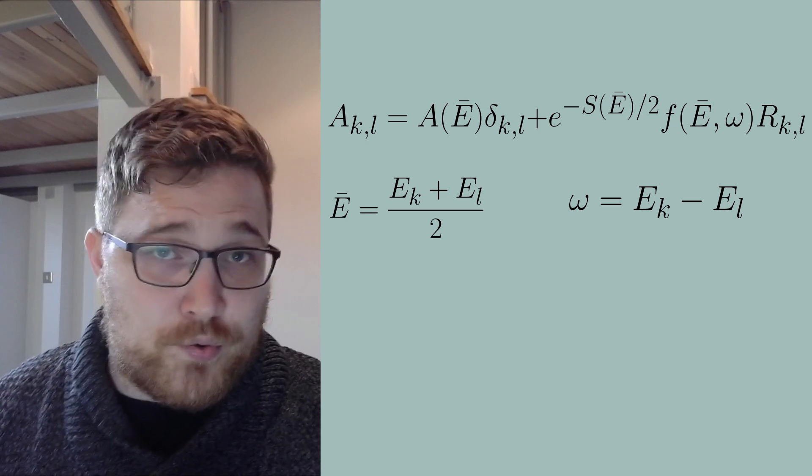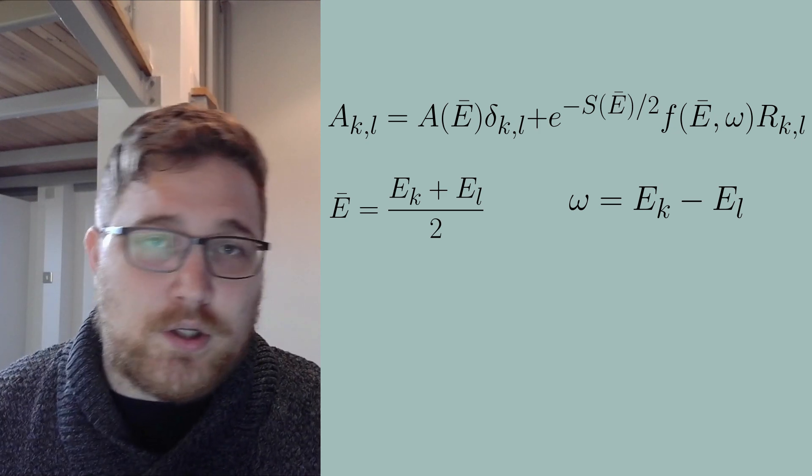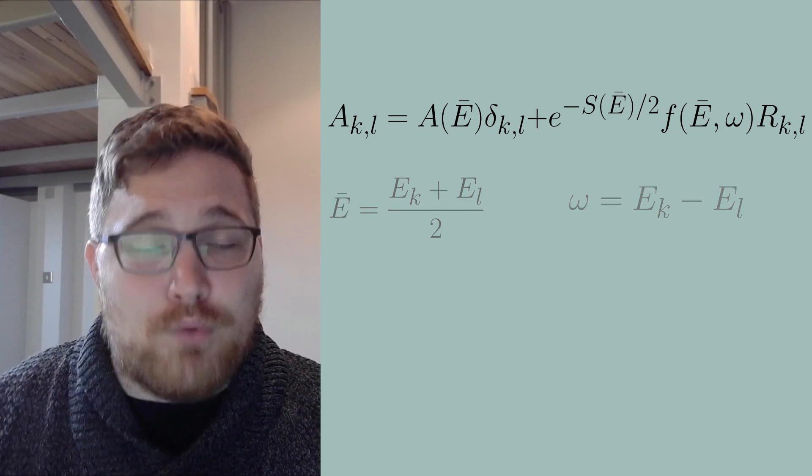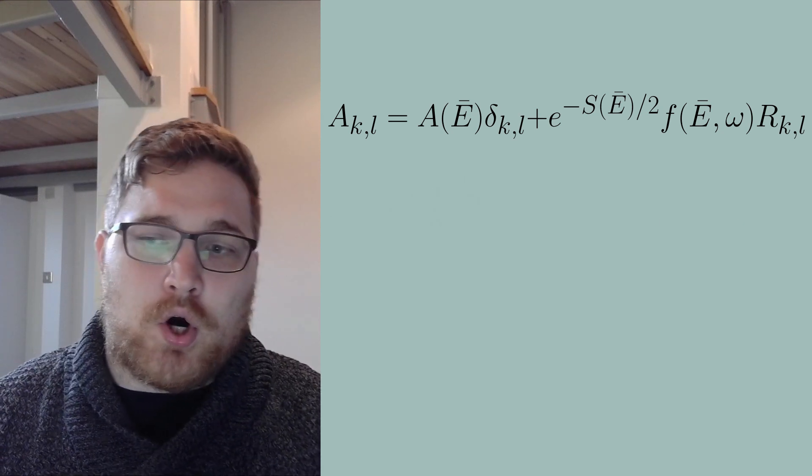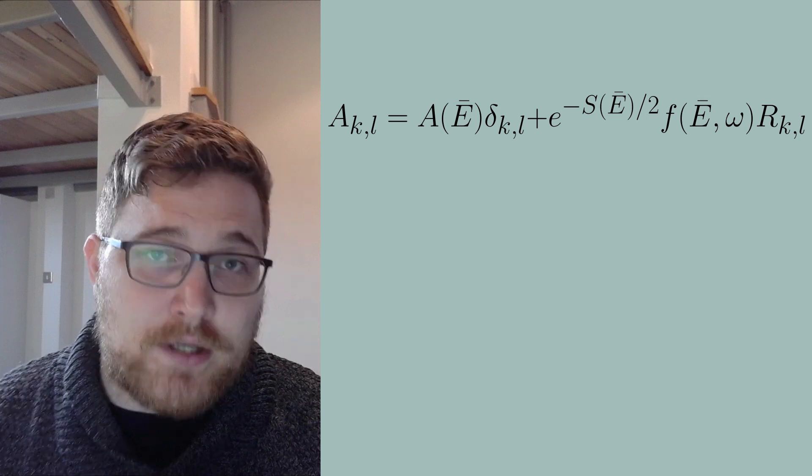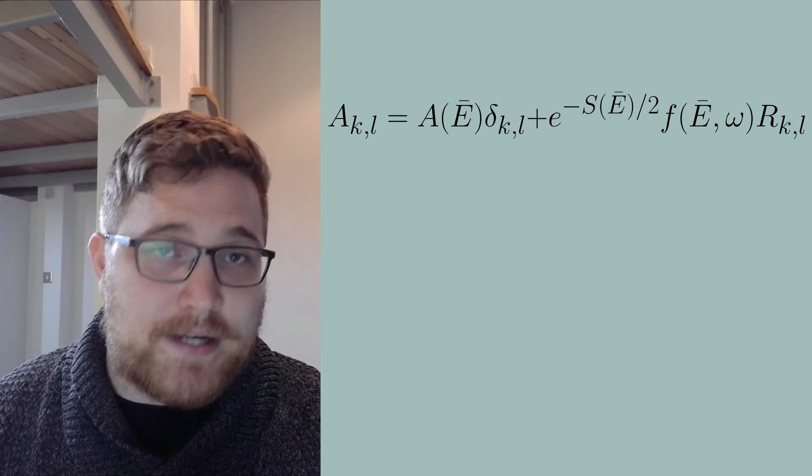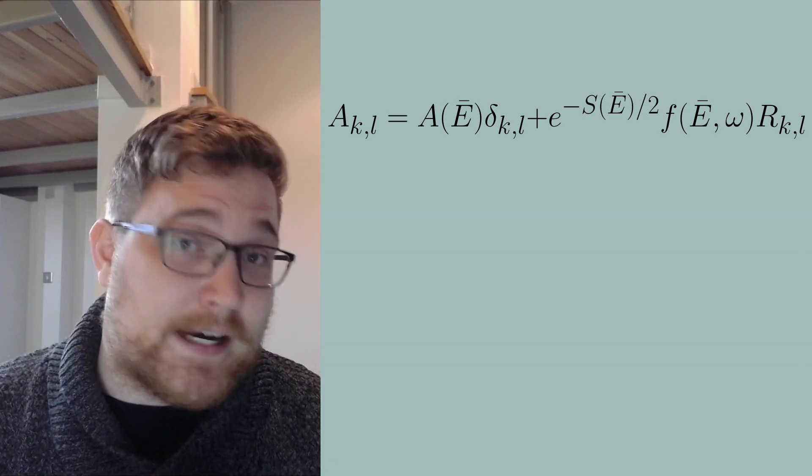But what does this equation tell us? It means that up to small corrections, the diagonal of our matrix is a smooth function of energy. And the off-diagonal elements are randomly distributed but suppressed by the thermodynamic entropy. And that is exponentially suppressed.